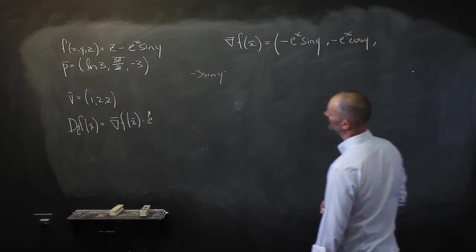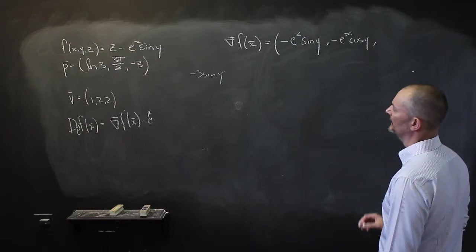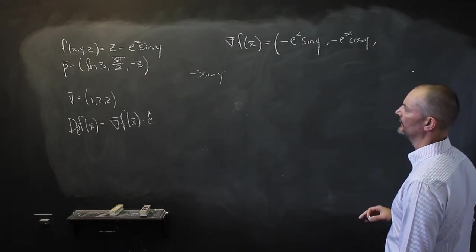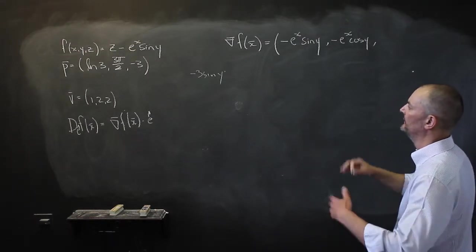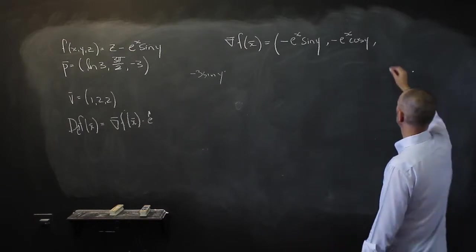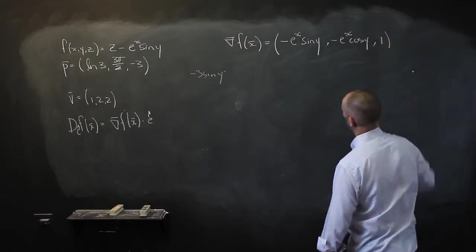Lastly, with respect to z: x and y are now constants, so it might as well be z minus 3. The partial derivative of that is just 1.